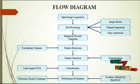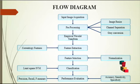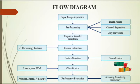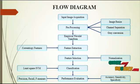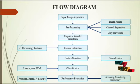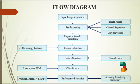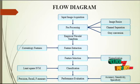Now we are going to see the flow diagram of the project, which consists of several stages. First is image acquisition, where we take input images from the dataset which consists of normal healthy eye images and glaucoma-affected eye images. After that, the pre-processing stage performs three operations: image resize, channel separation, and grey conversion.